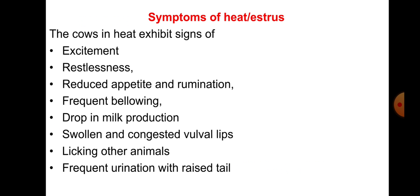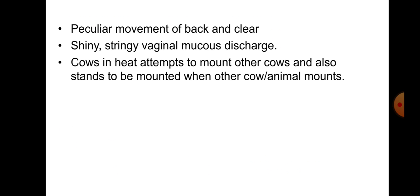These are the symptoms of heat or oestrus. First: excitement and restlessness. Second: reduced appetite and reduced rumination. Third: frequent bellowing. Fourth: drop in milk production. Fifth: congested and swollen vulval lips. Sixth: leaking - other animals notice. Seventh: frequent urination with raised tail. Eighth: movement of the back. Ninth: clear, shiny, and stringy vaginal mucus discharge.